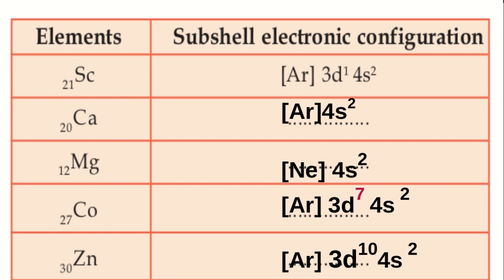In zinc, atomic number 30, subshell electronic configuration: [Ar] 3D10, 4S2.